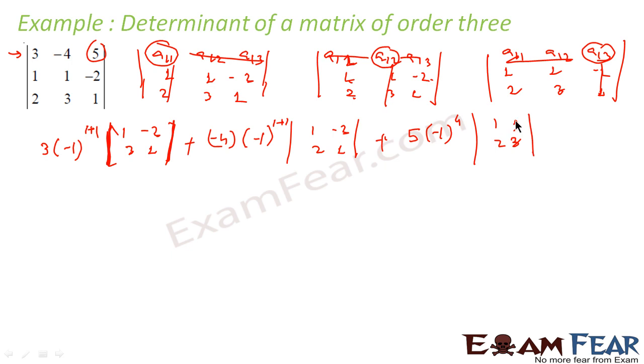Now, 3 into minus 1 to the power 2, that is 3. And this, you have to multiply the diagonal, subtract with the remaining number: 1 into 1 is 1, minus minus 3 into minus 2 is minus 6. Plus minus 6, plus minus 4 into this, 1 plus 2, correct. Because a 1 2 minus 4 into minus 1 is again 4.